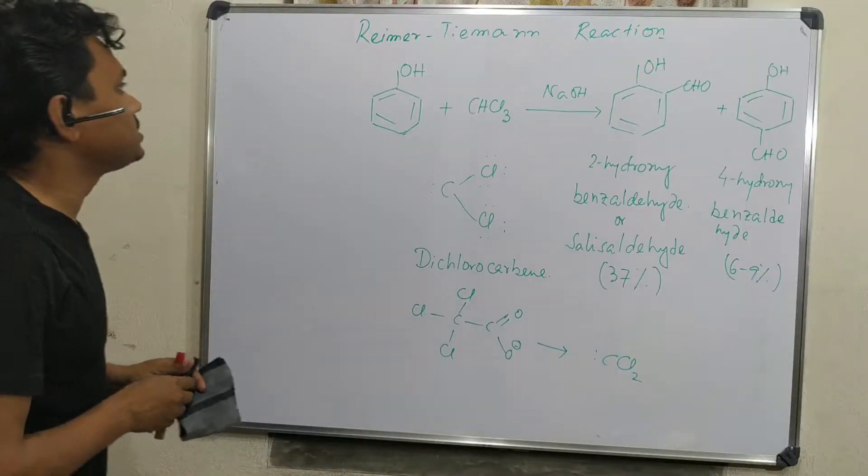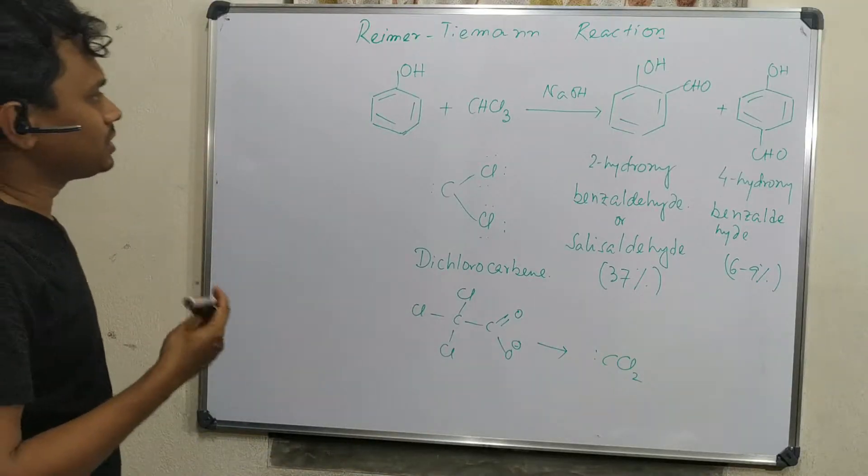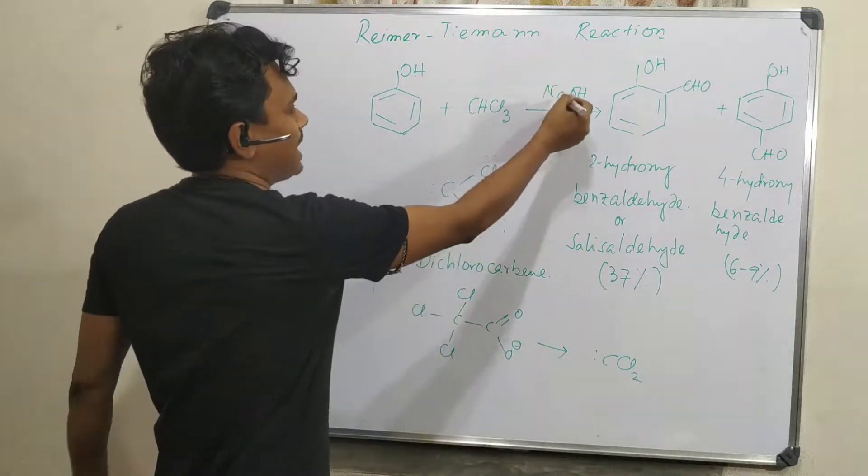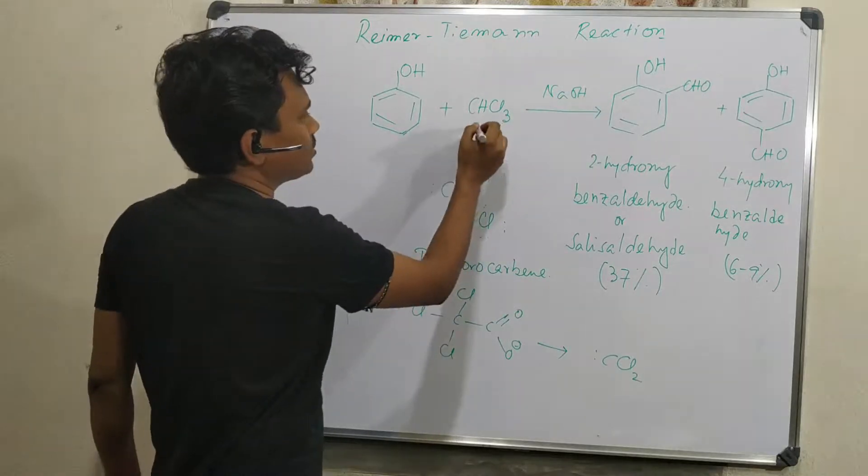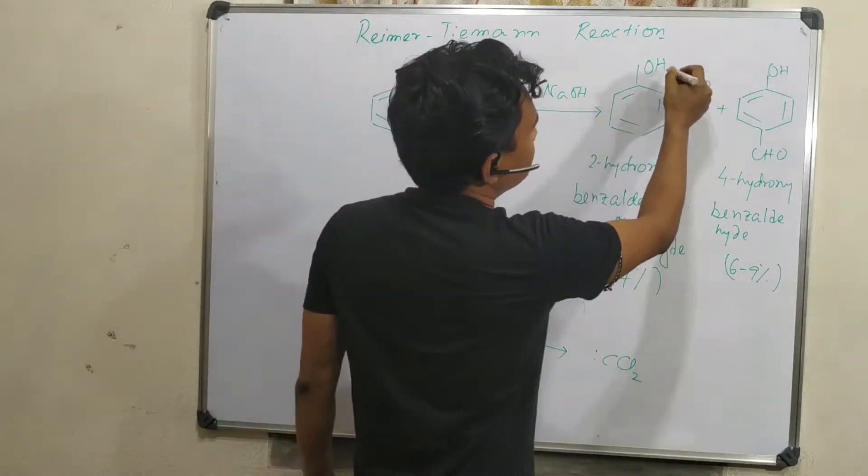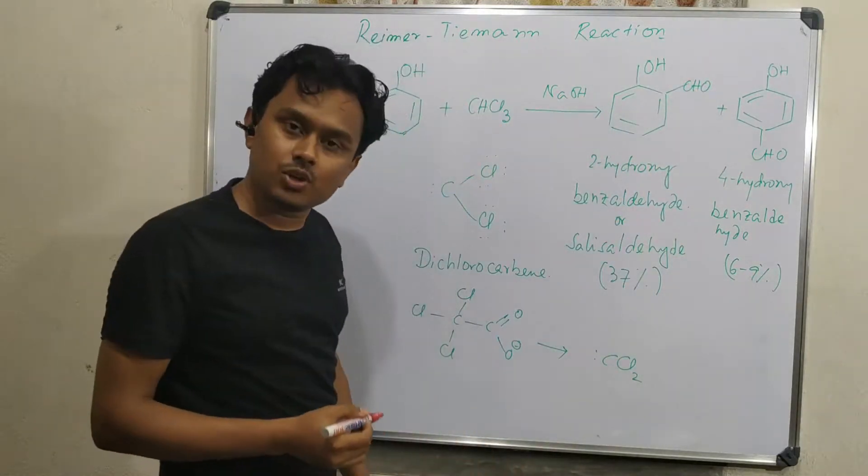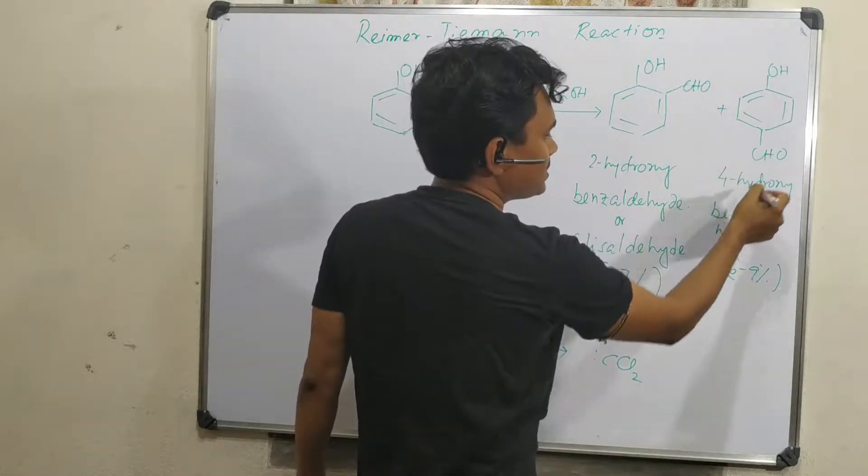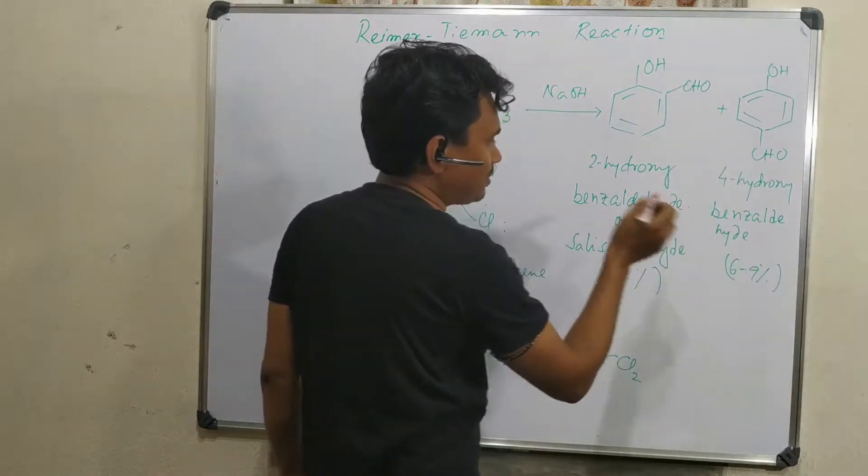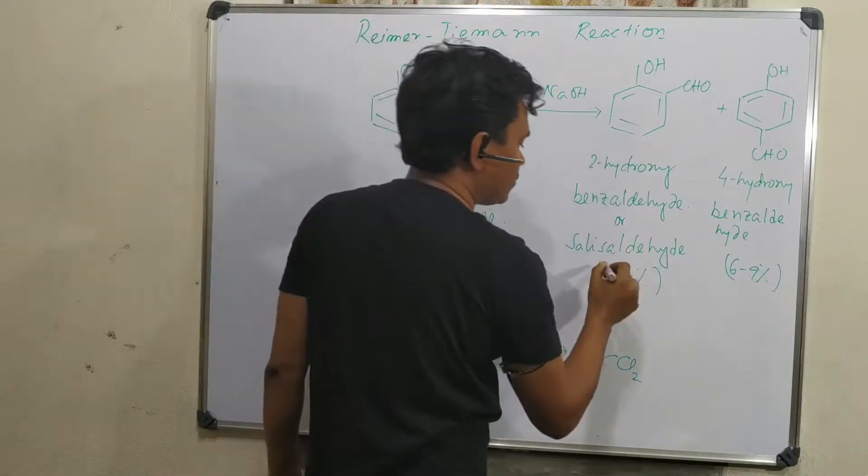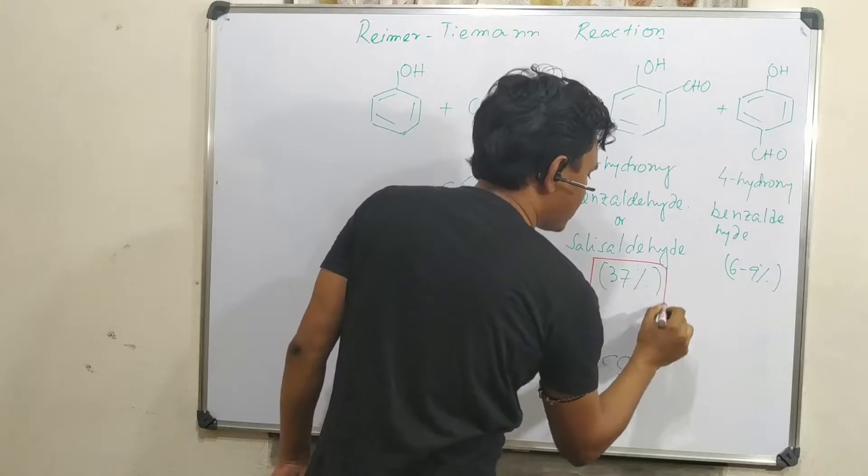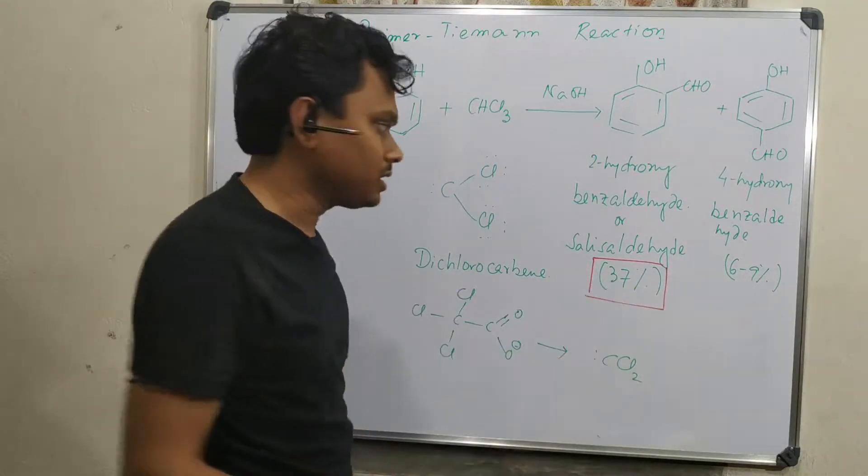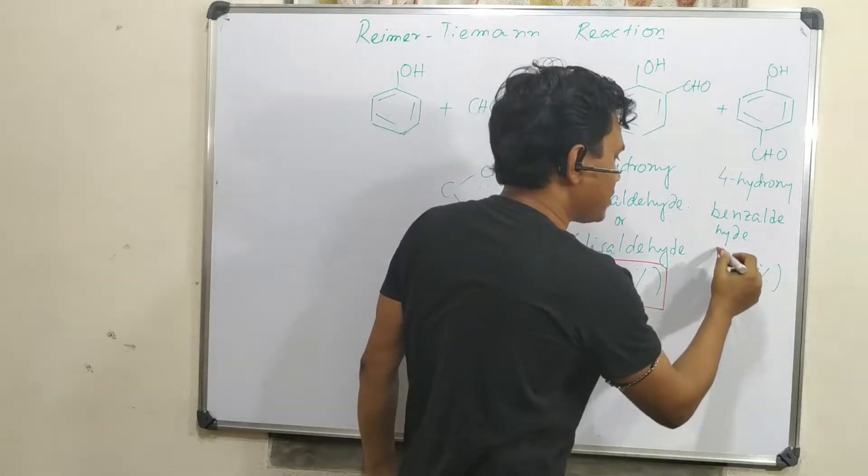This reaction is between phenol and chloroform. In alkaline medium, they react to produce ortho-hydroxybenzaldehyde or 2-hydroxybenzaldehyde or salicylaldehyde, and 4-hydroxybenzaldehyde or para-hydroxybenzaldehyde. The ortho isomer is the major product, although it appears less by conversion, and para is the minor product.